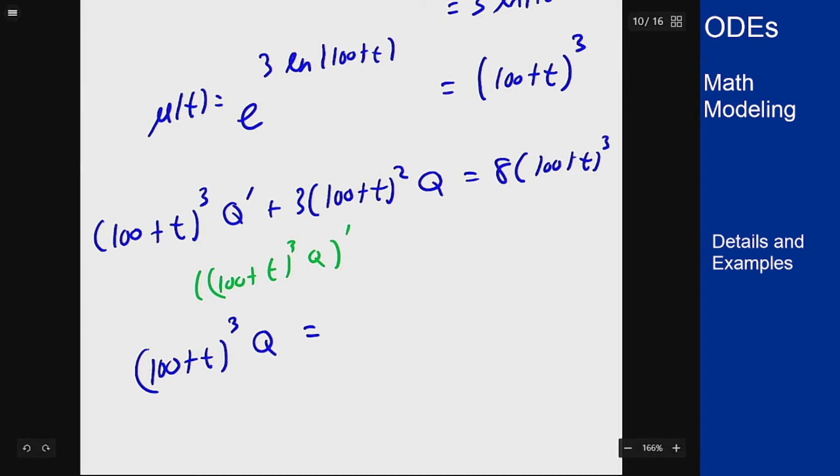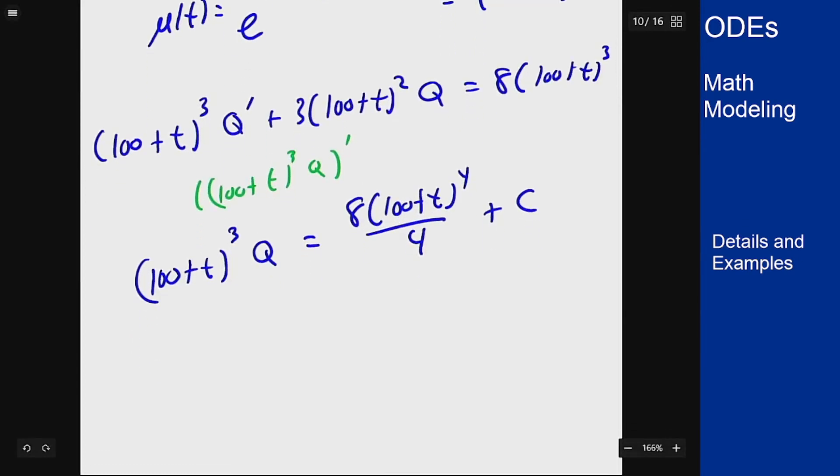If we substitute for 100 plus t, it's going to come out to be 8 times 100 plus t to the fourth over 4 plus c. I can divide both sides by 100 plus t cubed to get my solution Q(t) is 2 times 100 plus t plus c over 100 plus t cubed.